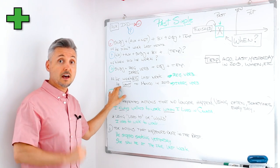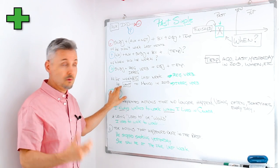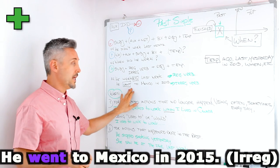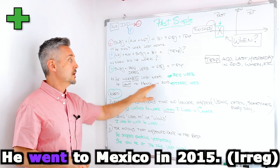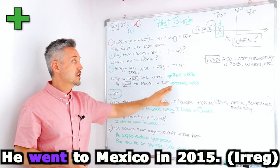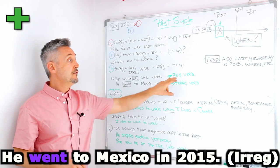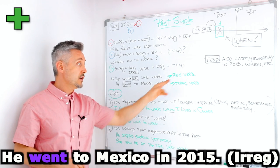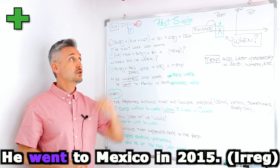Another example with an irregular verb to go is he went to Mexico in 2015. So, irregular verb. If you want to watch a lesson on regular and irregular verbs, you may click here.